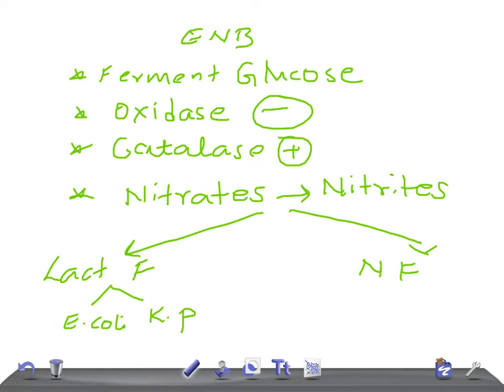Klebsiella pneumoniae is a capsulated organism. As the name itself indicates, it causes pneumonia. A distinctive feature is that it produces currant jelly sputum. It is associated with patients with alcoholism. In USMLE, if the history states the patient is alcoholic and develops pneumonia, you should think of Klebsiella pneumoniae.